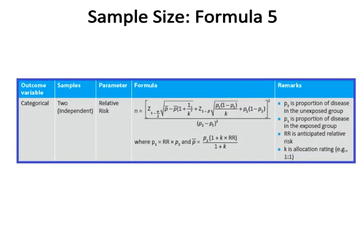Sample size formula five: the outcome variable is categorical, the samples are two of independent nature, and the parameter is relative risk. The formula is given in the above table, where P2 is the proportion of disease in the unexposed group, P1 is the proportion of disease in the exposed group, RR is the anticipated relative risk, and k is the allocation ratio — for example, one to one.